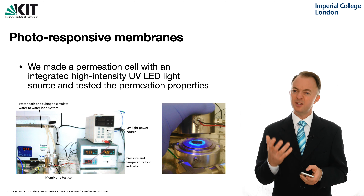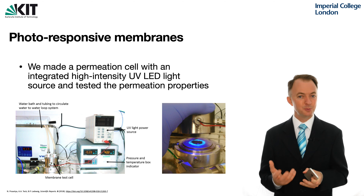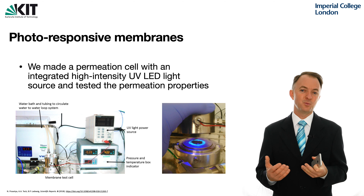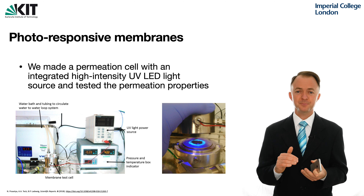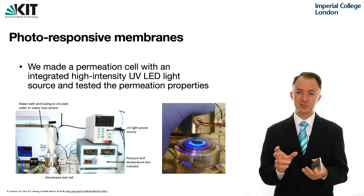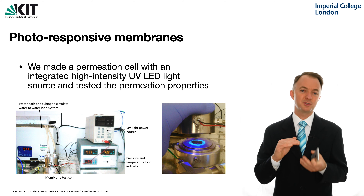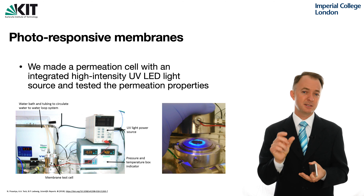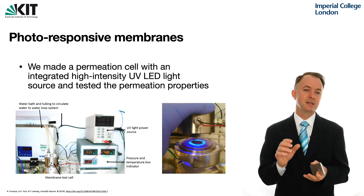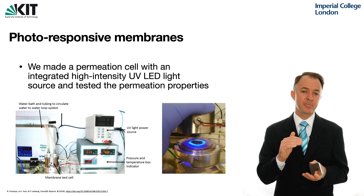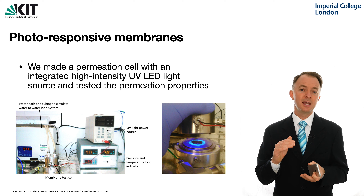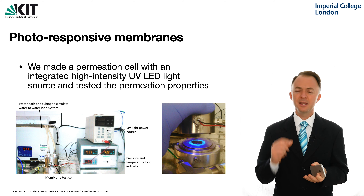We needed to measure these membranes in a permeation cell where we could illuminate them, and to do that we actually needed to invent a new type of permeation cell where we could easily get light to the membrane. This was the first generation of cell we invented: we made a conventional permeation cell, increased the headspace above the membrane, and placed a high-performance, high-intensity LED inside there, providing power to the cell which produced intense UV light relatively close to the membrane surface so we were able to illuminate our membranes that way.